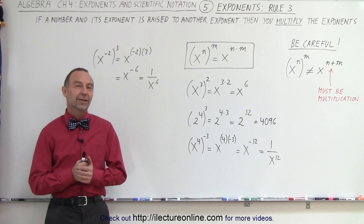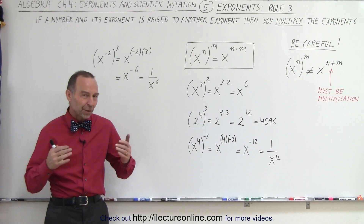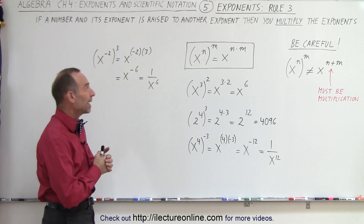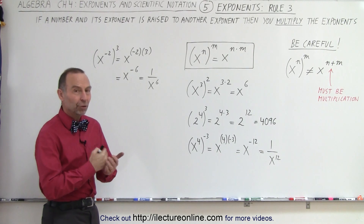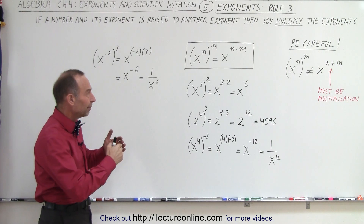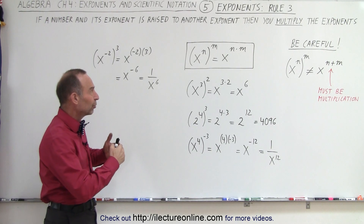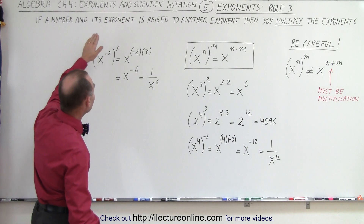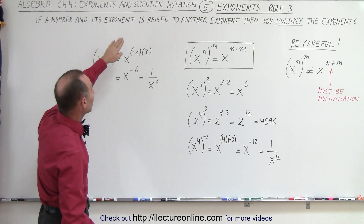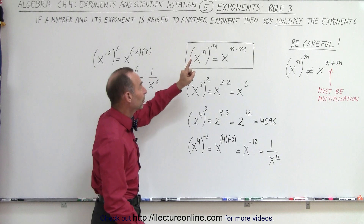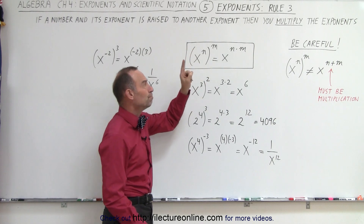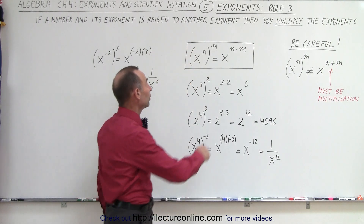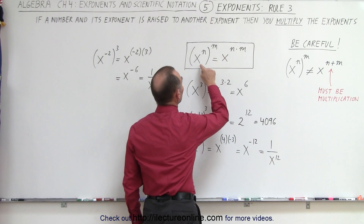Welcome to Electron Online. The third of the three big rules with exponents is where we have a number raised to an exponent, which is then by itself raised to another exponent. So if a number and its exponent is raised to another exponent, then you multiply the exponents. The result is you will multiply the two exponents.